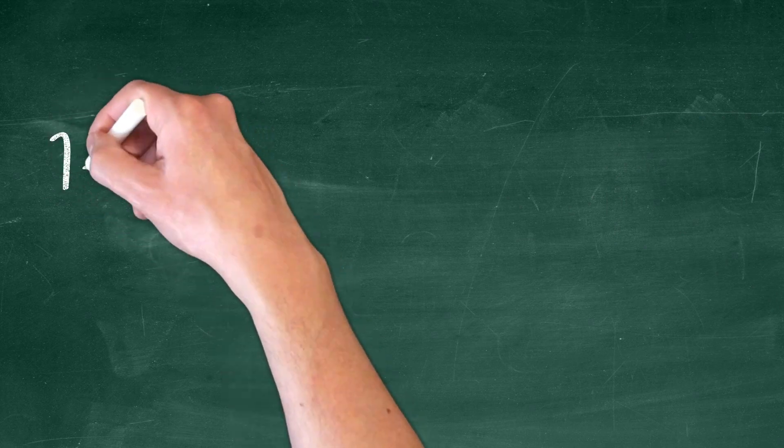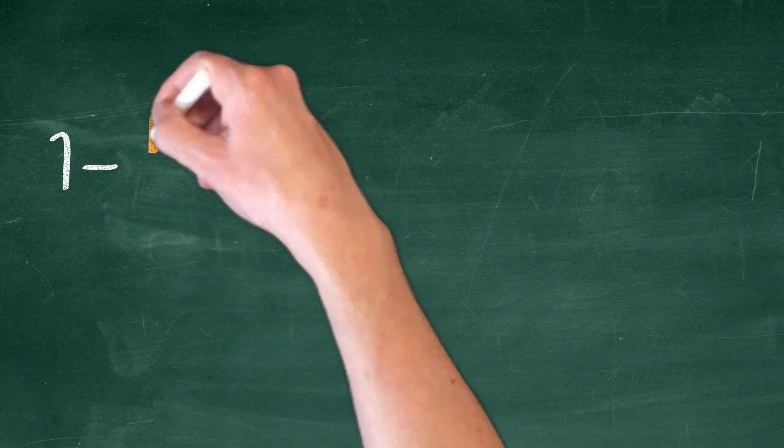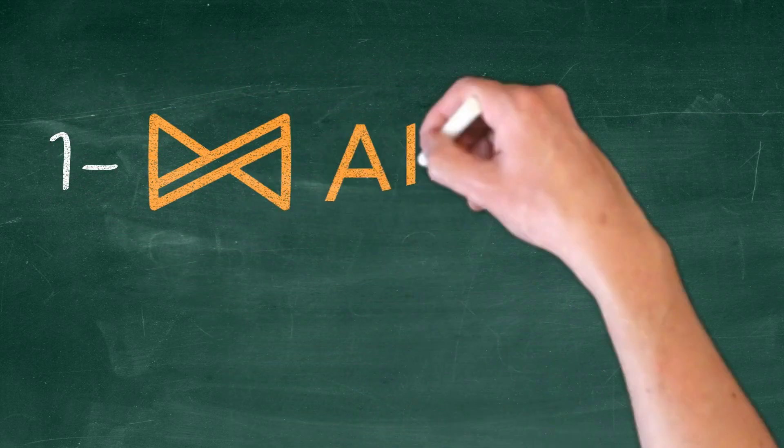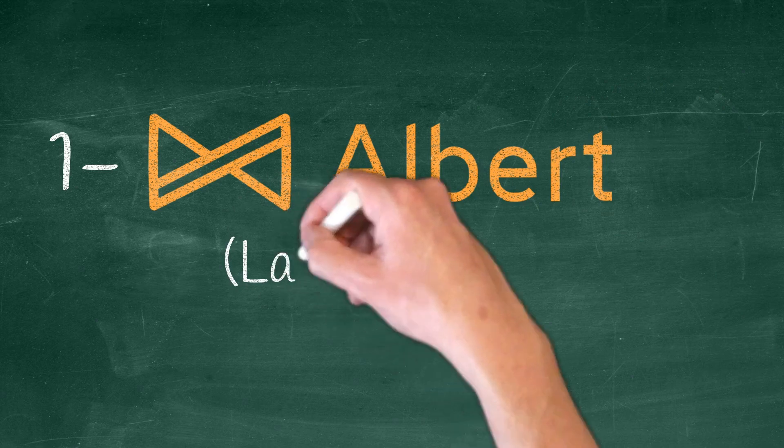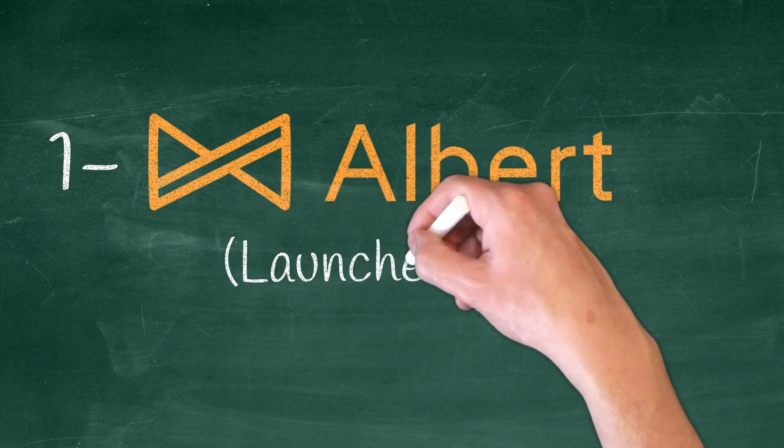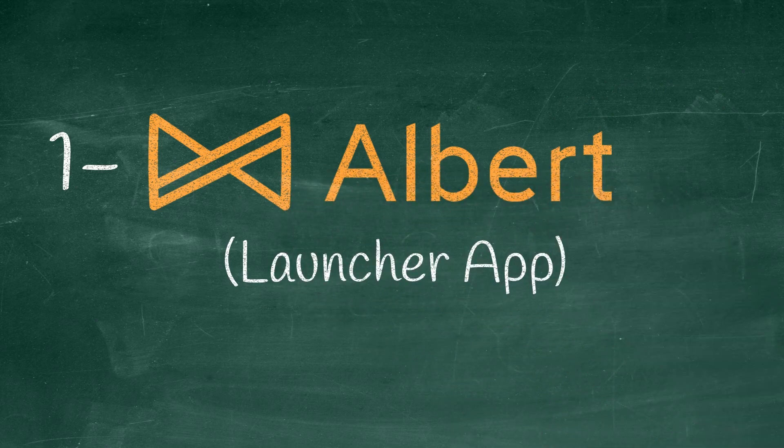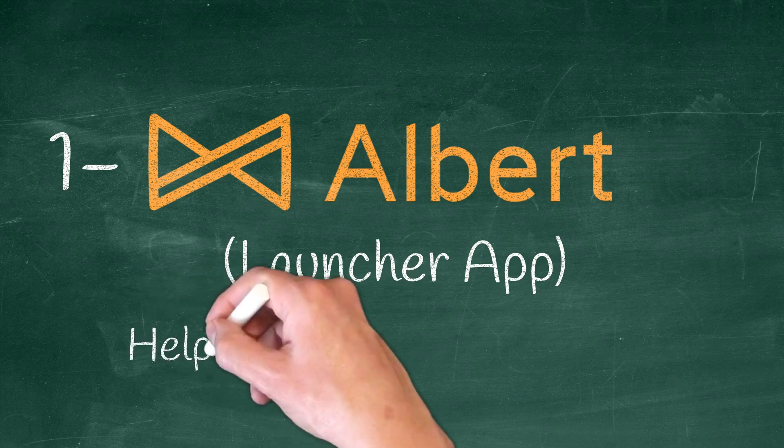Number 1, Albert. Albert is inspired by Alfred and still in the development phase. Albert is fast, extensible, and customizable. The goal is to access everything with virtually zero effort. It integrates with your Linux distribution nicely and helps you to boost your productivity.